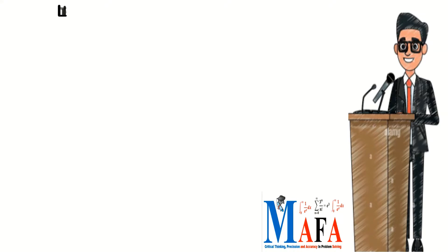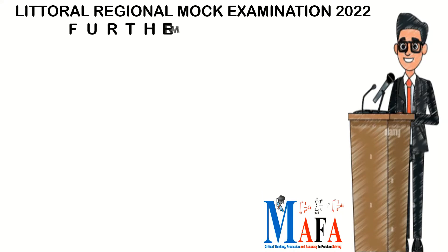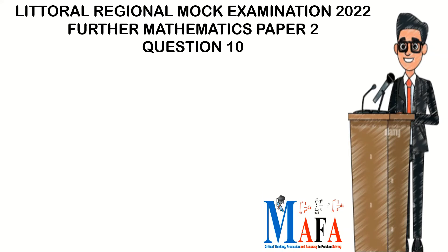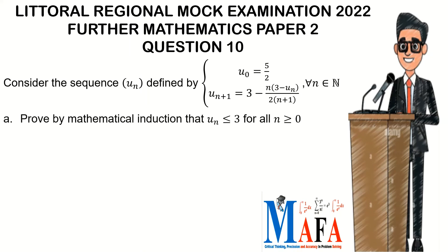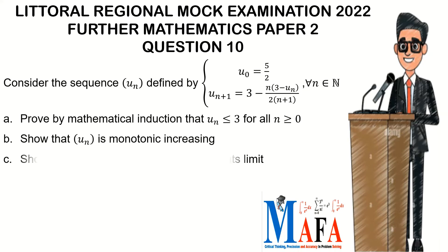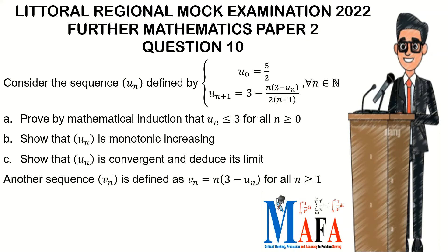Hi everyone. In this video we are going to be looking at the literal original mark scheme for a math Paper 2, and we are going to be looking at question 10 — the equation which considers the sequence u_n. Parts of the question include: prove by mathematical induction that u_n is less than or equal to 3 for all n greater than or equal to 0; show that u_n is monotonic increasing; show that u_n is convergent and deduce its limit. Another sequence v_n is defined as v_n equals n times (3 minus u_n) for all n greater than or equal to 1.